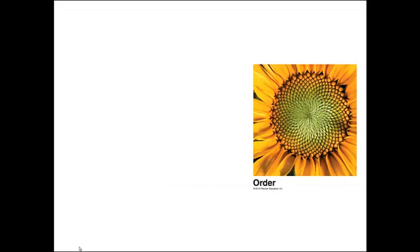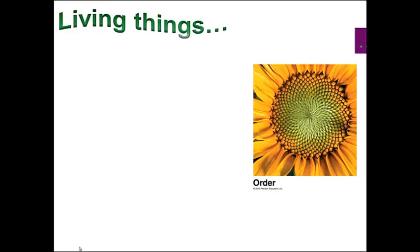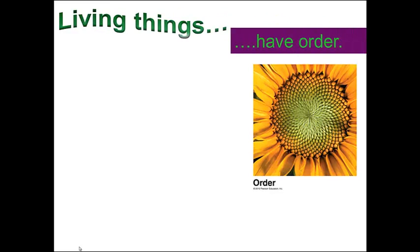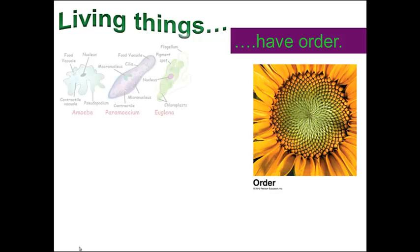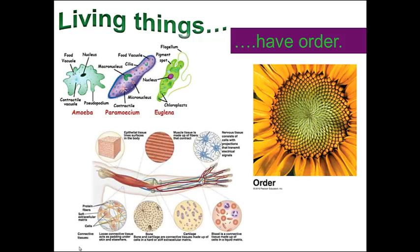Let's take a look at each. Each living thing has order. Order is the idea that whether you're unicellular or multicellular, life is organized into cells. Cells are the smallest unit capable of life. Entire organisms are made up of one single cell, like our amoeba, paramecium, and euglena, you see at the top of the figure.